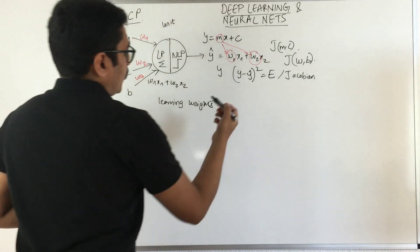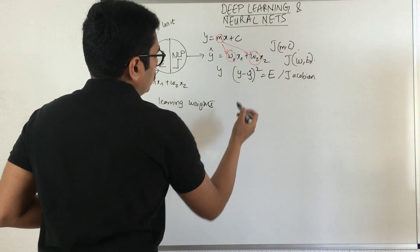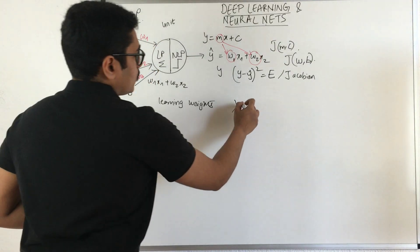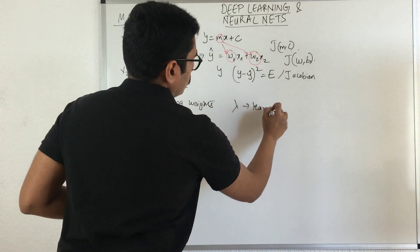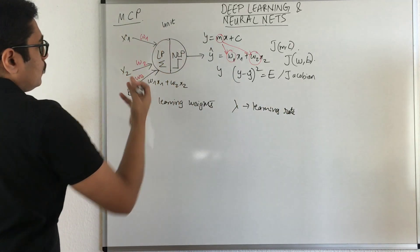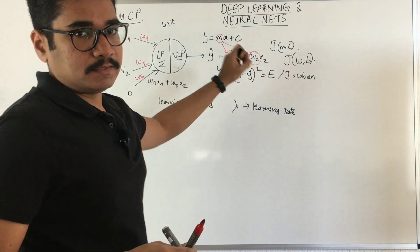If you remember, we did gradient descent. What we had is a parameter called Lambda. These are nothing but the learning rates.